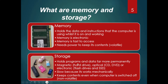Storage, on the other hand, holds data far more permanently. We have different types: magnetic storage like traditional hard drives, optical storage with CDs and DVDs, and electronic storage. The older hard drives are slower because they work mechanically. However, storage keeps its contents even when the PC is switched off — this is what makes it non-volatile.